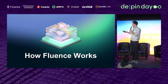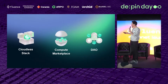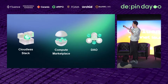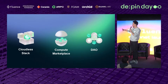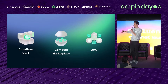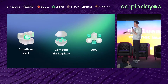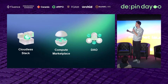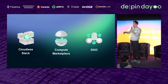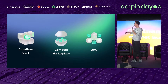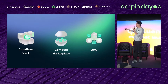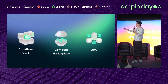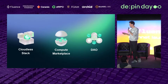I'm going to explain how Fluence works without really deep technical details, so I hope it would be clear for everyone. We think of Fluence as three big components: a compute marketplace — a global network of compute providers who contribute resources and make them available for consumers. Consumers are mainly developers who develop and deploy applications to this network, using what we call the cloudless stack. All of this is managed by the DAO.